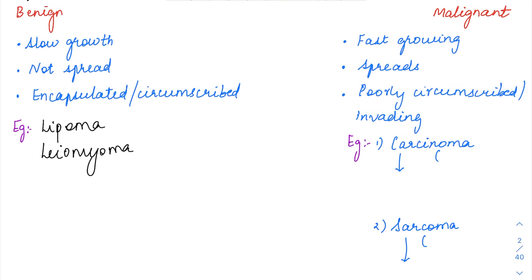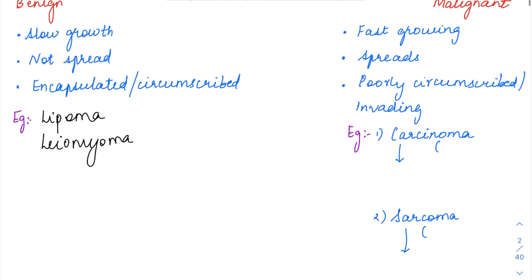Coming to malignant tumors, malignant tumors are going to grow rapidly and they are going to spread also. Spread is one of the hallmarks of malignancy. Since they are going to be invading and then growing and spreading to other tissue, they are going to be having an infiltrative kind of border. Rather than being well circumscribed like a benign tumor, they are going to have an ill circumscribed and infiltrative kind of border.